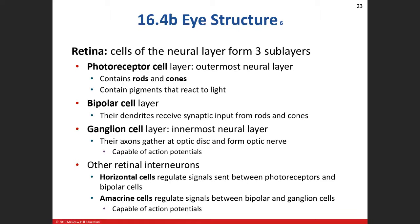Rods are more for low-light scenarios. The bipolar cell has a cell body with two processes — an axon and a dendrite. The dendrite end receives input from photoreceptor cells, then transmits that information to the ganglion cell layer. The axons of the ganglion cells form the optic nerve, which is where action potentials are generated.